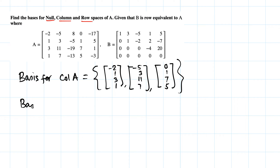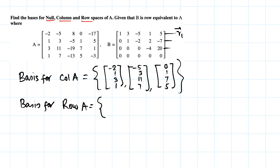Now for the row space: the basis for row(A) comes from the nonzero rows of B, the row echelon form of A. The last row is all zeros, so we take the three nonzero rows from B. Let's call them R1, R2, and R3.